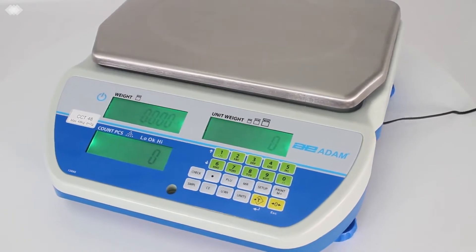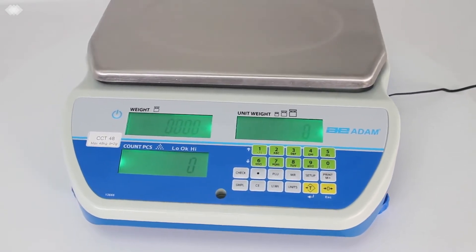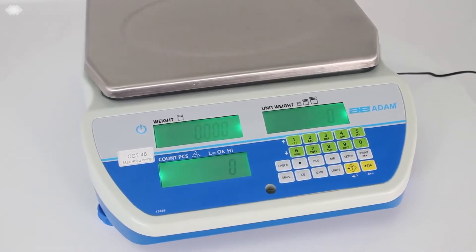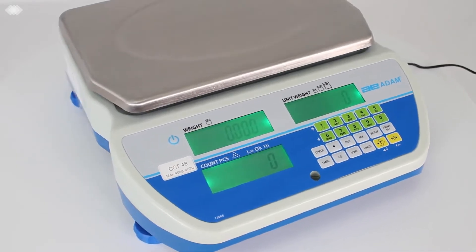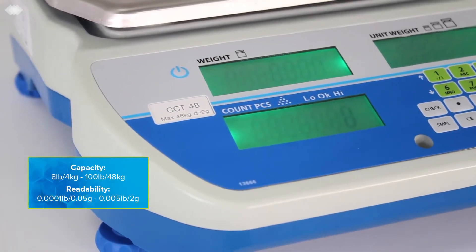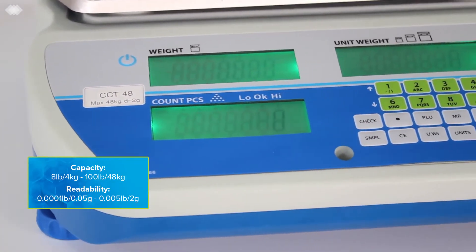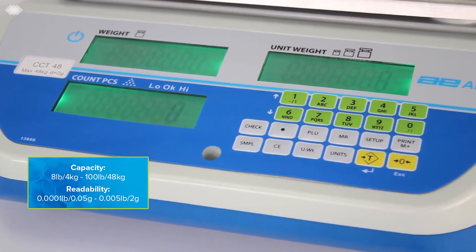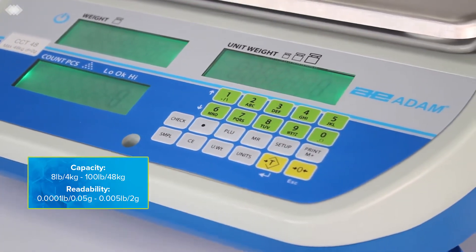Cruiser CCT bench counting scales deliver powerful performance for counting and check counting for your industrial applications. CCT models offer capacities from 4 kilograms to 48 kilograms and readabilities of 0.05 grams to 2 grams.